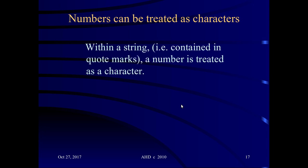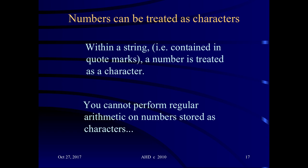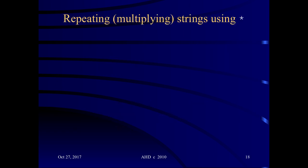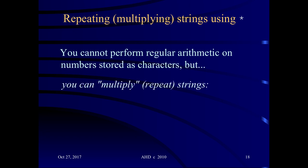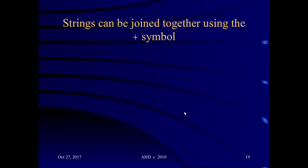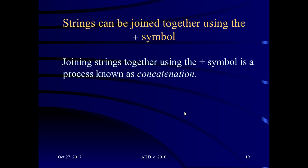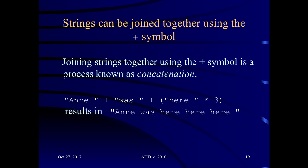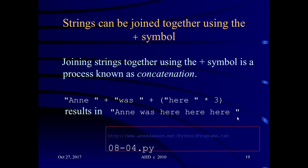Now, string operations. A number is treated as a character if you contain it within quote marks, and you cannot perform regular arithmetic on numbers stored as strings. But you can repeat strings using the multiply symbol. For example, the string '3' multiplied by 4 results in '3333'. You can also join strings together using the plus operator, a process known as concatenation. Here I'm concatenating multiple strings, and a string can be multiplied by 3. If your string includes a space, that space will be included in the multiplication. See program 08-04.